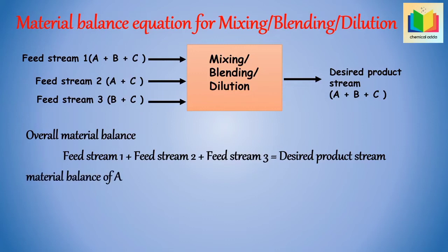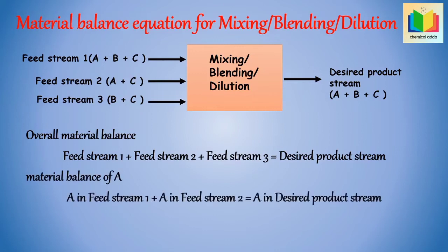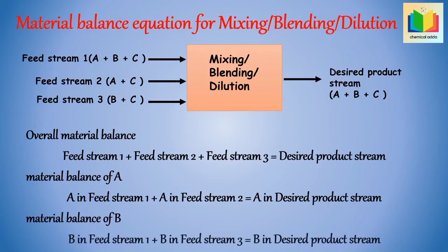the material balance for A can be written as: A in feed stream 1 + A in feed stream 2 = A in the desired product stream. Similarly, B is present only in feed stream 1, feed stream 3 and the product stream, hence the material balance of B is: B in feed stream 1 + B in feed stream 3 = B in the desired product stream.